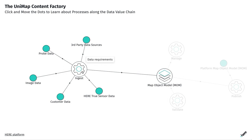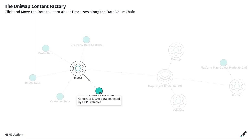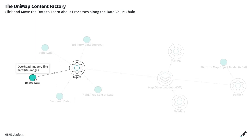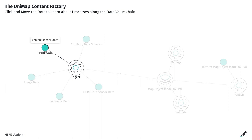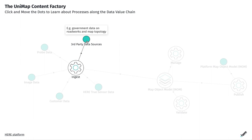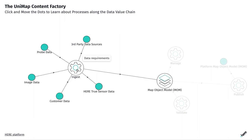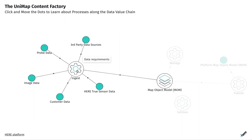Map content creation starts with one or multiple content sources describing the location and nature of any given real-world feature. These sources can be captured from the real world, extracted from satellite or street-level imagery, derived in real-time from connected sensors, or acquired from third parties and commons. This raw content data is turned into meaningful information by adding it into a geographic reference system, which we call INGEST.